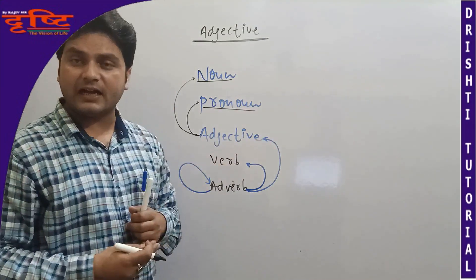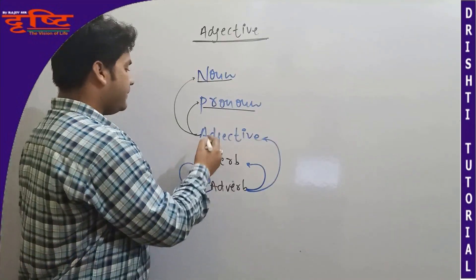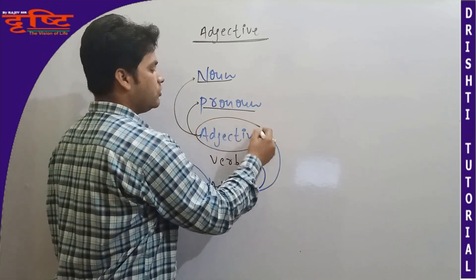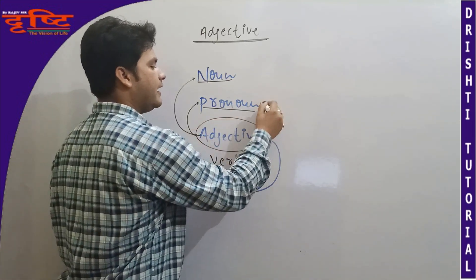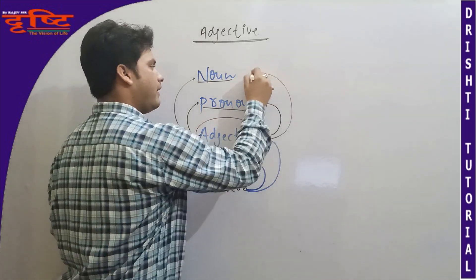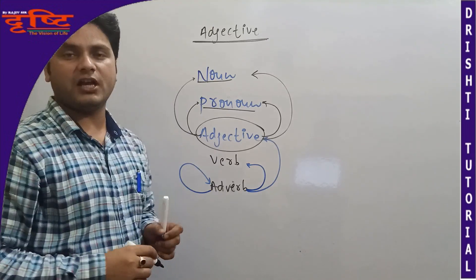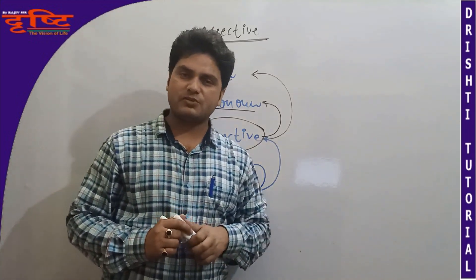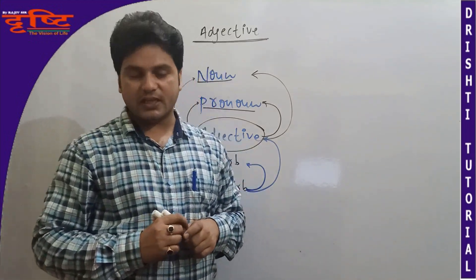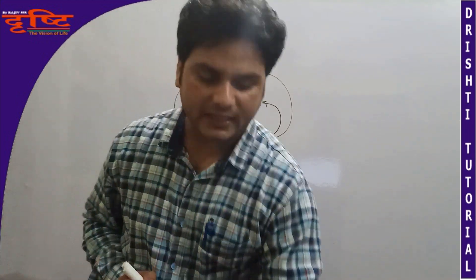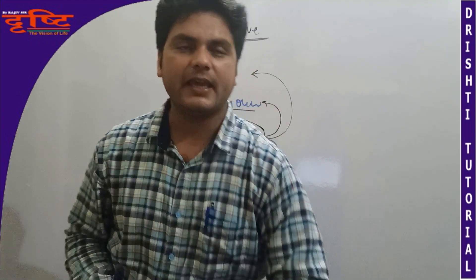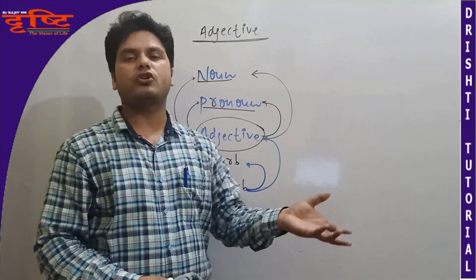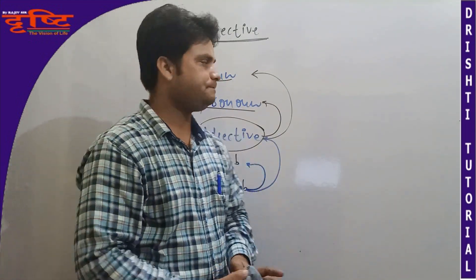Modify karne ka kaam adjective karta hai. Agar adjective ki baat karein to ye modifier hai, ye qualifier hai — kiska? Noun and pronoun ka. Yeh baat samajh mein aa gayi. Chaliye hum log start karte hain iske examples ko, taaki iska jo definition hai wo clear ho sake.